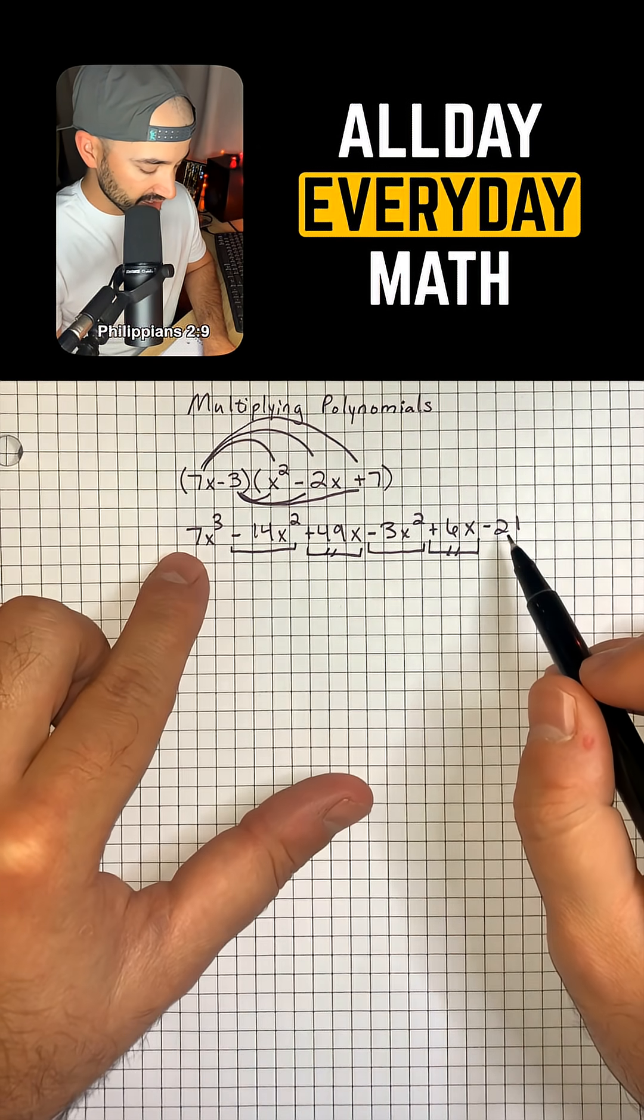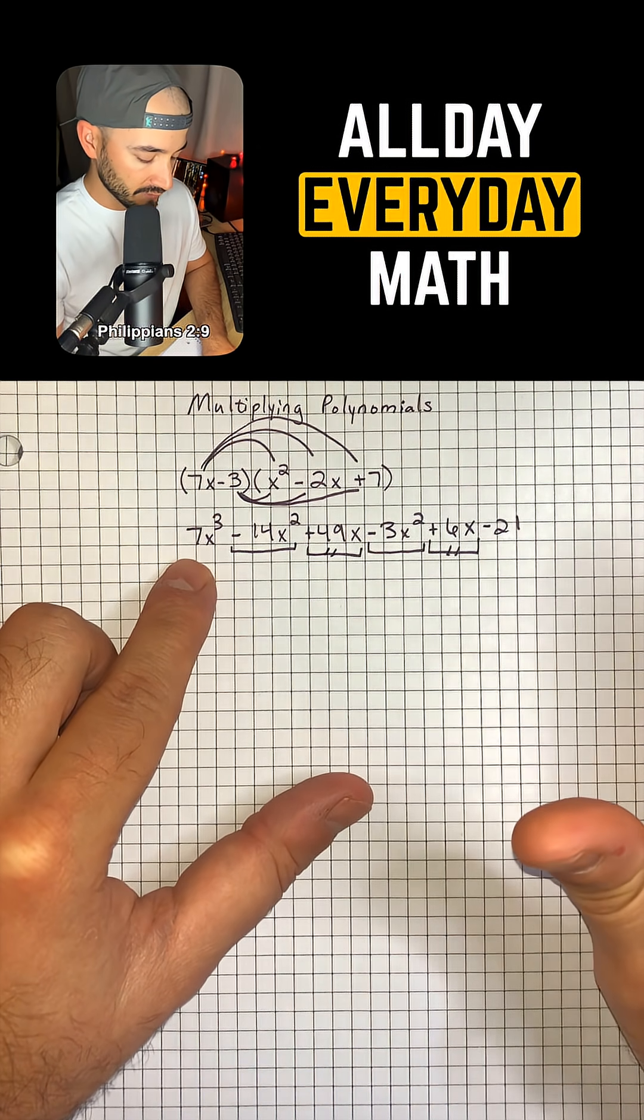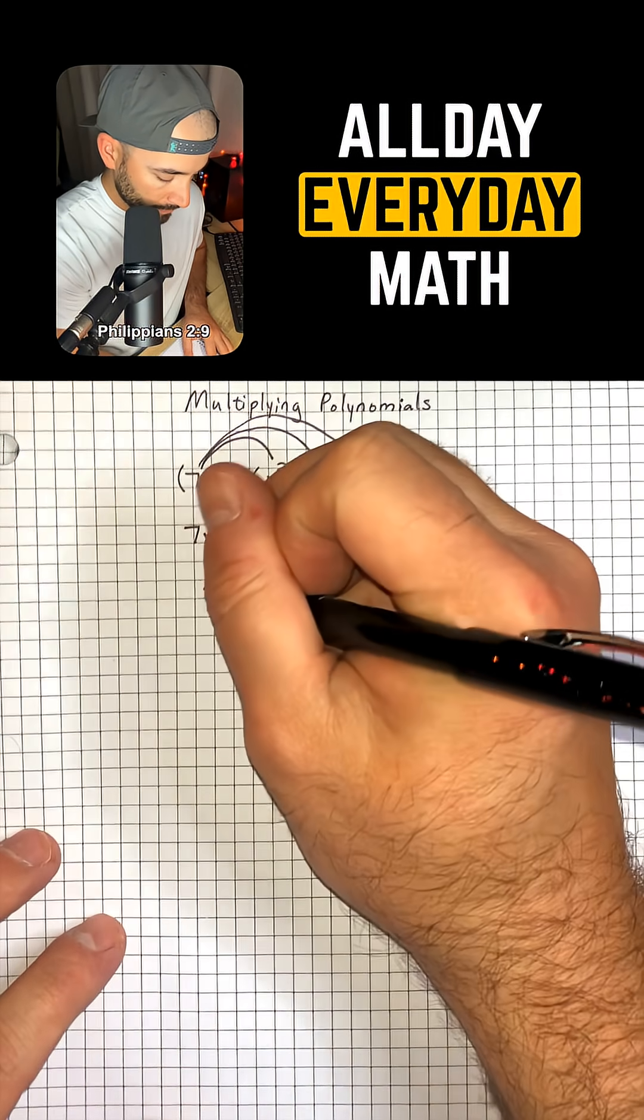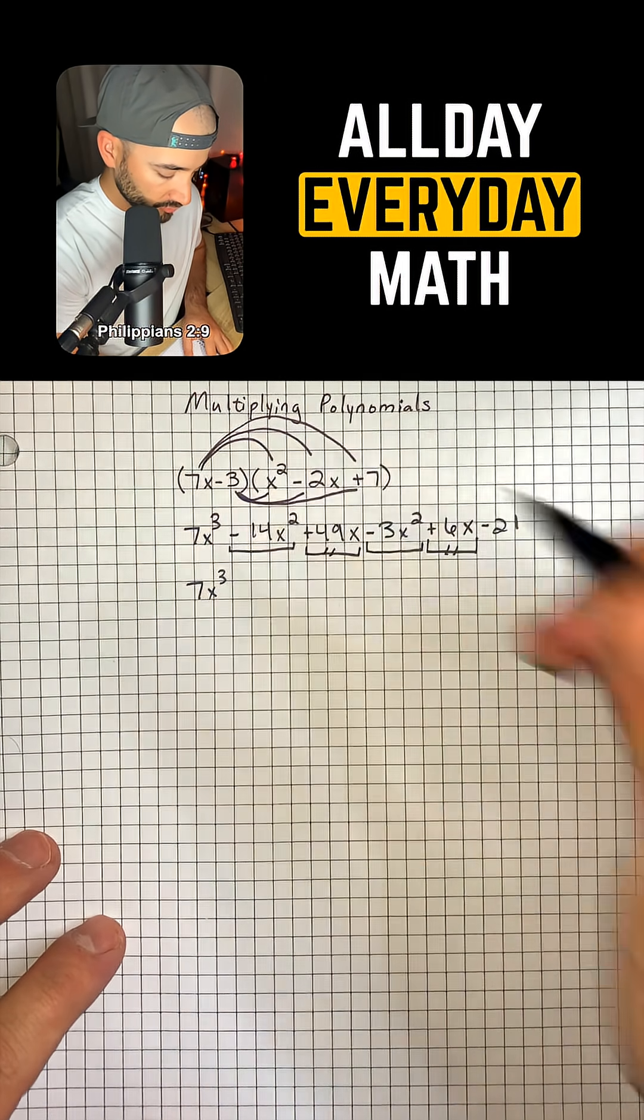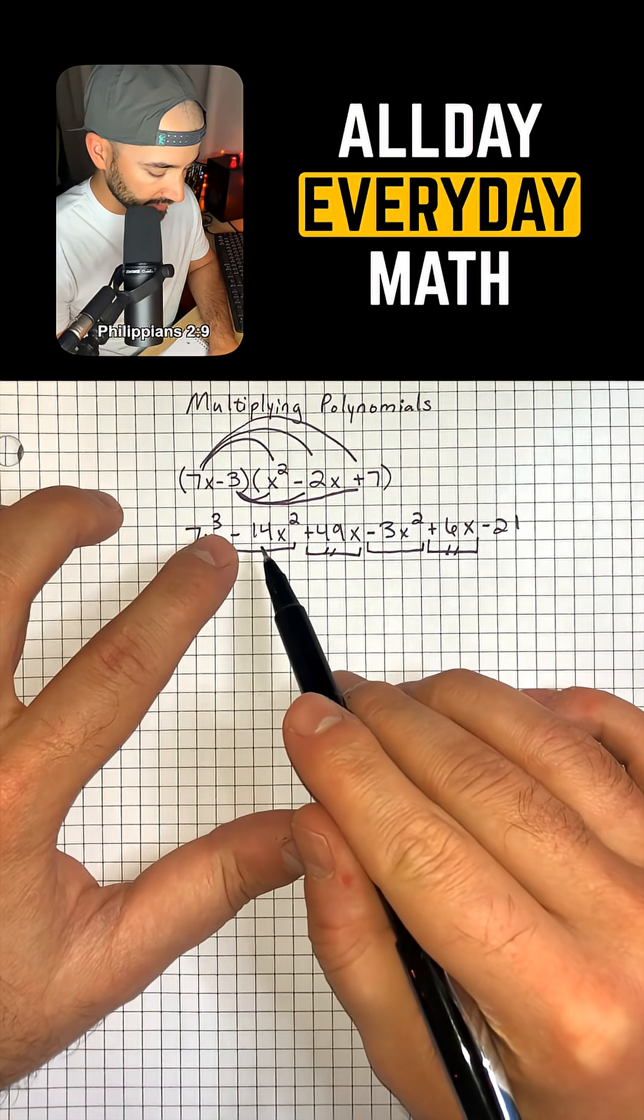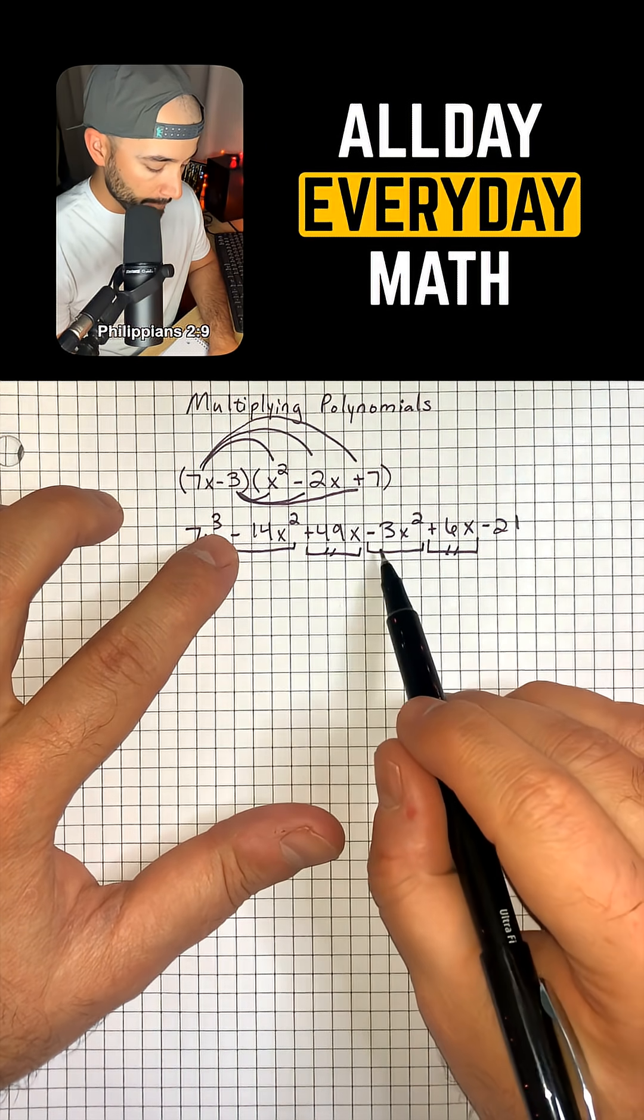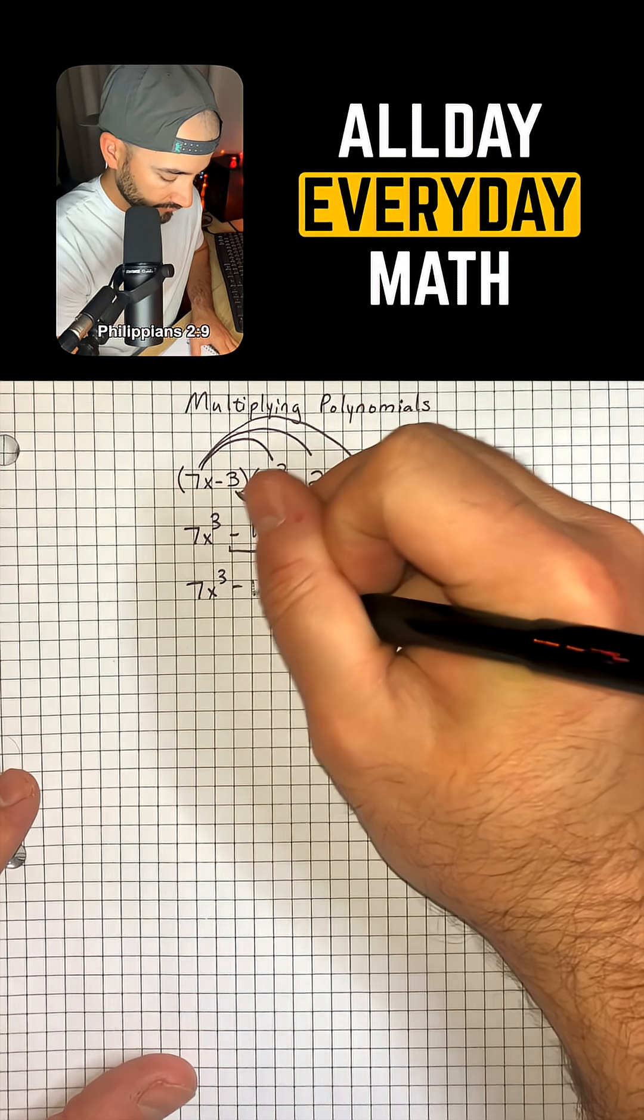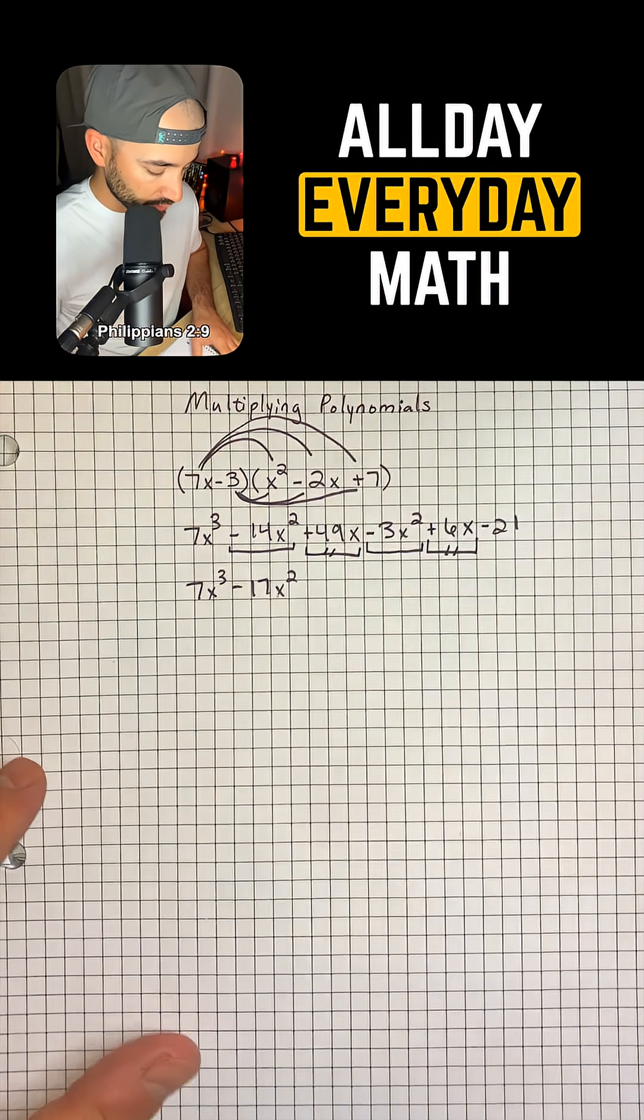The minus 21 and the 7x to the third do not have any like terms. So now we can go ahead and work this problem. So 7x cubed, and then we're going to combine negative 14x squared minus 3x squared to give us negative 17x squared.